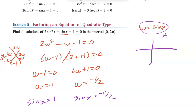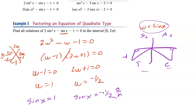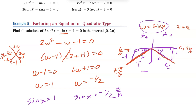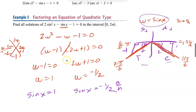For sine x = −1/2: All Students Take Calculus — sine is negative in quadrants T and C. Sine is SOH, so opposite is 1, hypotenuse is 2. That's a 30-60-90 triangle, so the reference angle is 30 degrees, which is π/6. Moving past π (which is 6π/6) gives 7π/6, and just before 2π (which is 12π/6) gives 11π/6.